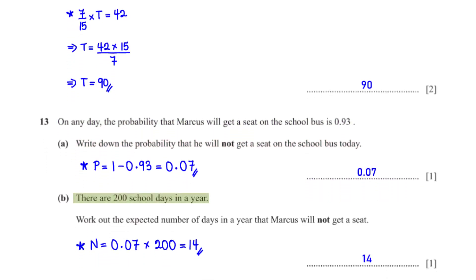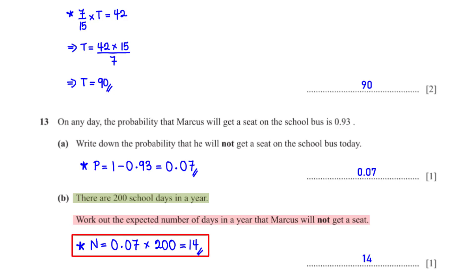There are 200 school days in a year. Work out the expected number of days Marcus will not get a seat. We multiply the probability of not getting a seat, 0.07, by 200, giving us 14 days.